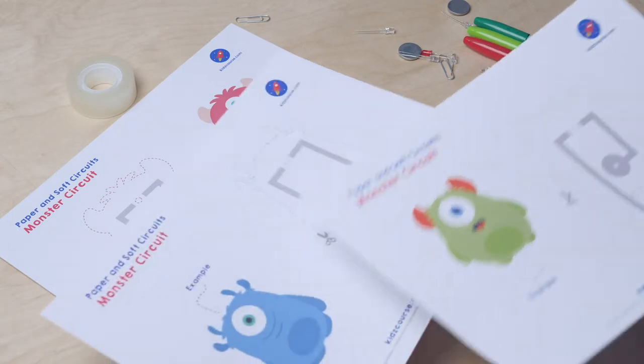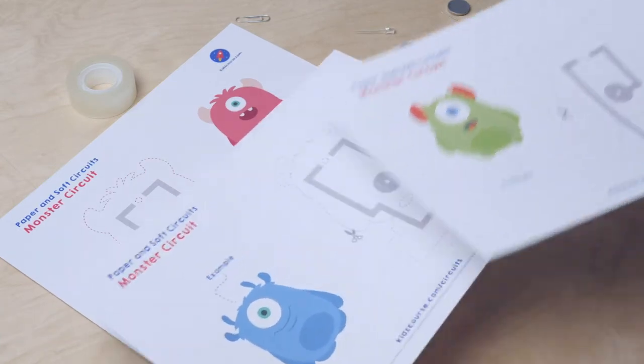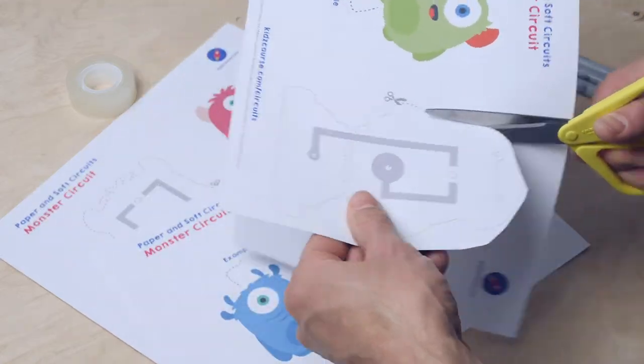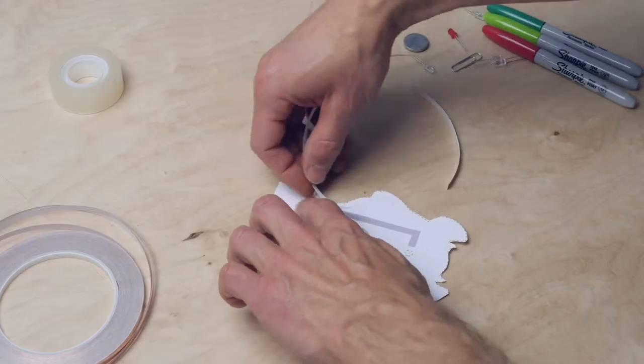Now, let's get to work on the monsters. Choose a monster and do exactly what you just did. Cut the monster out. Attach the tape.